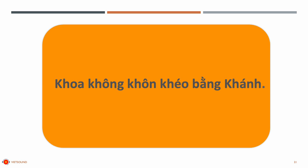Now let's try to say a sentence with many of the KH sound. We're going to do it in three steps. On the first step, I'm going to say the sentence very very slowly. Then I'm going to do it a little bit faster. And on the last step, I'm going to say the sentence with normal speed. Khoa không khôn khéo bằng Khánh.